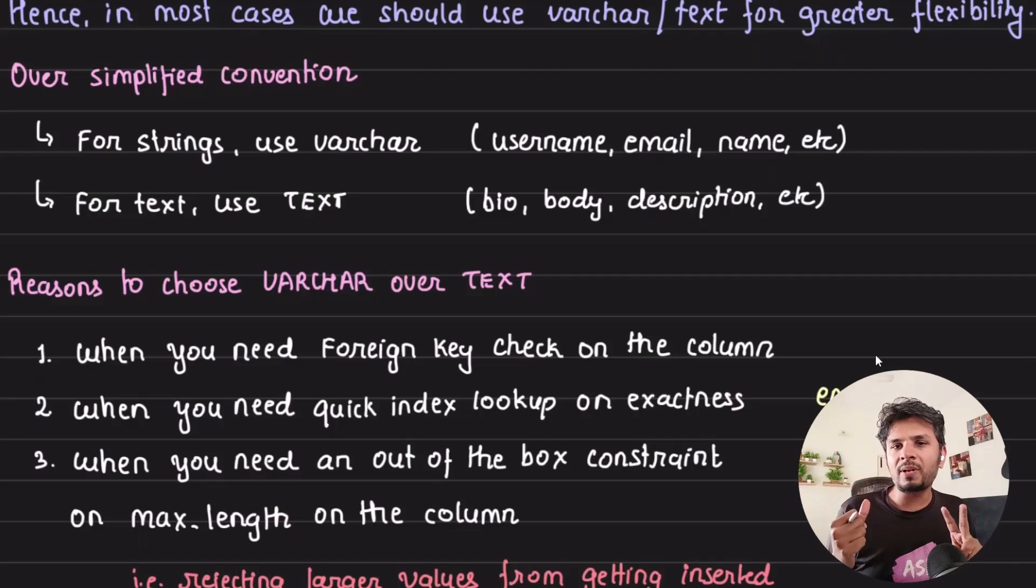Second, when you need a quick index lookup on exactness. For example, select * from people where email is equal to this. This is where varchar excels slightly over text.